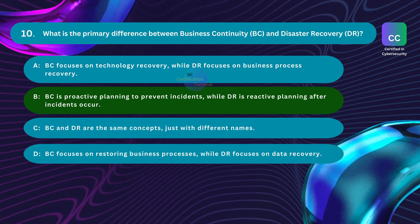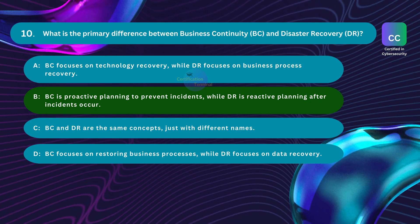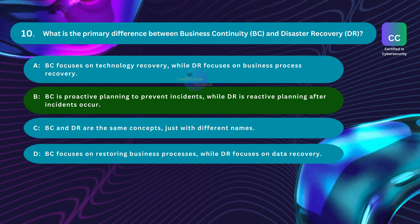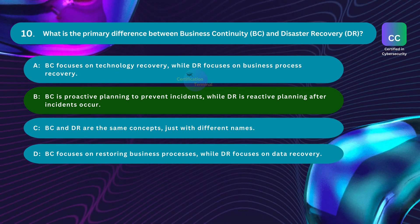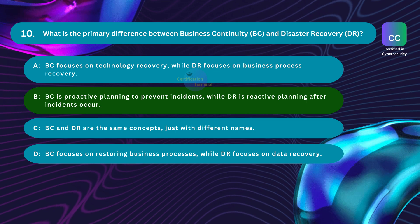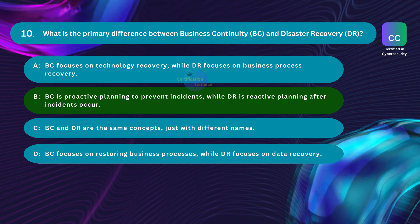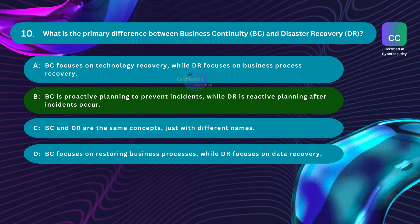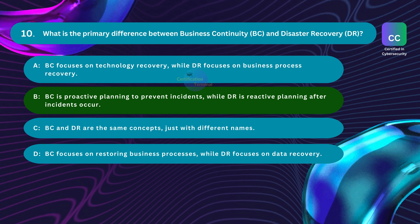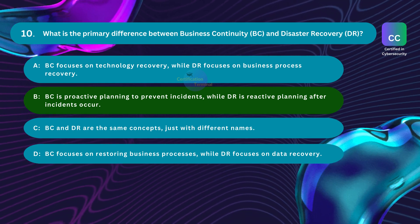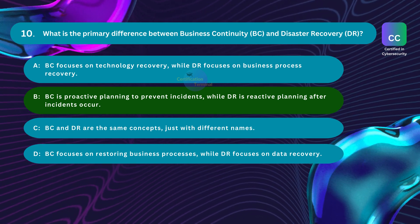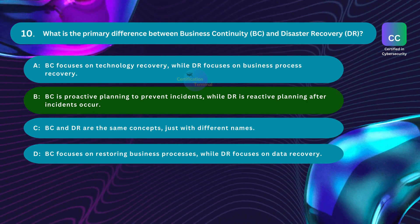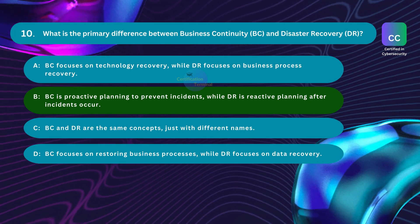Business continuity and disaster recovery are both critical components of an organization's resilience strategy, yet they address different aspects of risk management. Business continuity is a proactive strategy aimed at ensuring an organization's essential functions continue during and after a disruptive incident. It involves risk identification, risk assessment and mitigation, preventive measures, and continuous improvement. Disaster recovery, in contrast, is reactive and primarily concerned with restoring an organization's IT infrastructure and systems after a disaster. Key elements include system restoration, recovery time objective (RTO), recovery point objective (RPO), immediate response, and a focus on IT.